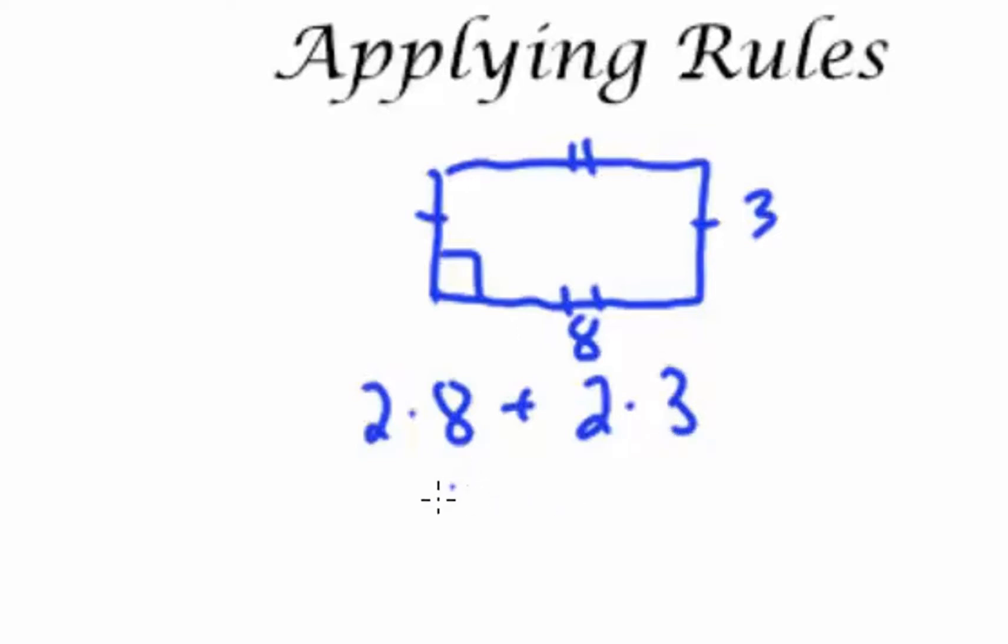So I can set up a multiplication problem: 2 times 8 plus 2 times 3. 16 plus 6 will give me a perimeter of 22.